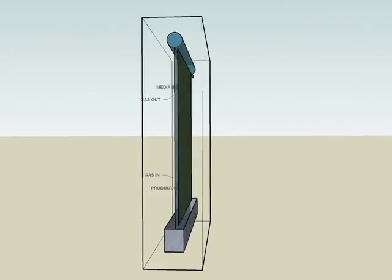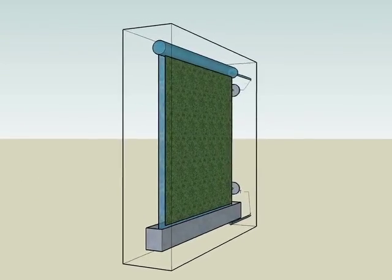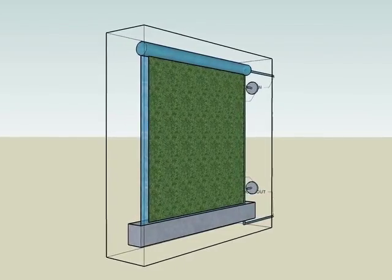Products carried to the bottom of the reactor by the support layer are collected in a trough before being carried out of the reactor.